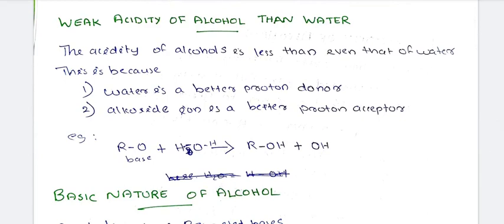Now comparing alcohol and water acidity: alcohol is weaker in acidity than water. Water is a better proton donor than alcohol. Also, the alkoxide ion is a better proton acceptor. These are the two reasons why alcohol is less acidic than water — water is a better proton donor and alkoxide ion is a better proton acceptor.